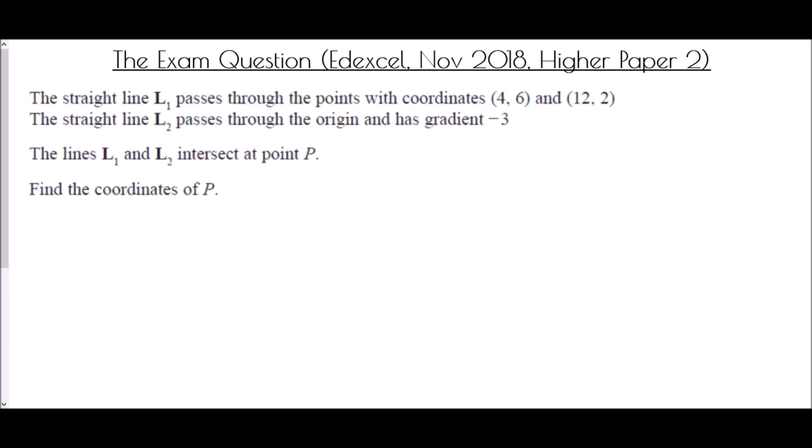We end with an exam question from the Edexcel November 2018 higher paper 2. Straight line L1 passes through (4, 6) and (12, 2). Straight line L2 passes through the origin and has gradient -3. Lines L1 and L2 intersect at point P — find the coordinates of P. I'll break this into three sections: finding L1, finding L2, then the intersection.